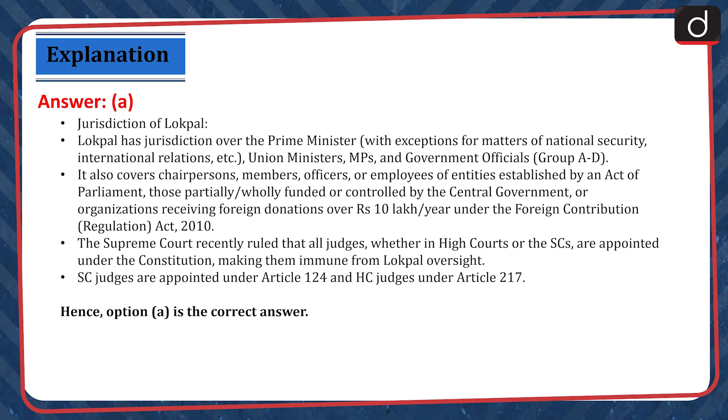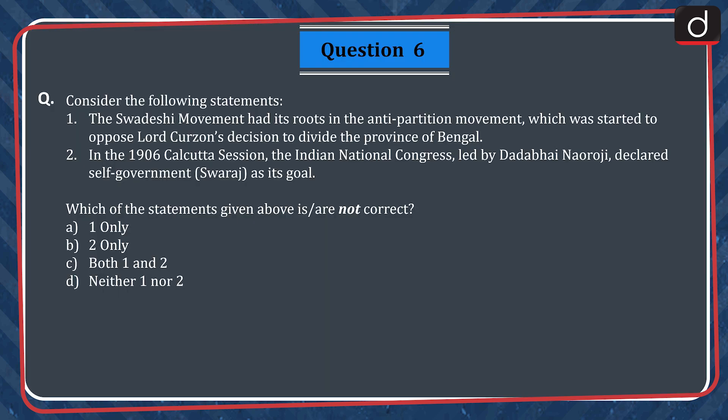Question 6. Consider the following statements. 1. The Swadeshi movement had its roots in the anti-partition movement, which was started to oppose Lord Curzon's decision to divide the province of Bengal. 2. In the 1906 Calcutta session, the Indian National Congress led by Dadabhai Naoroji declared self-government or Swaraj as its goal. Which of the statements given above is not correct? A. One only. B. Two only. C. Both 1 and 2. D. Neither 1 nor 2. The correct answer is Option D.